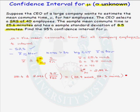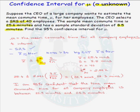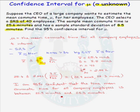The last thing to do is write the English statement that corresponds to our confidence interval. The English statement should read: I am 95% confident that the true mean commute time for all company employees is between 22.9 minutes and 28.3 minutes. And we have our 95% confidence interval for mu.